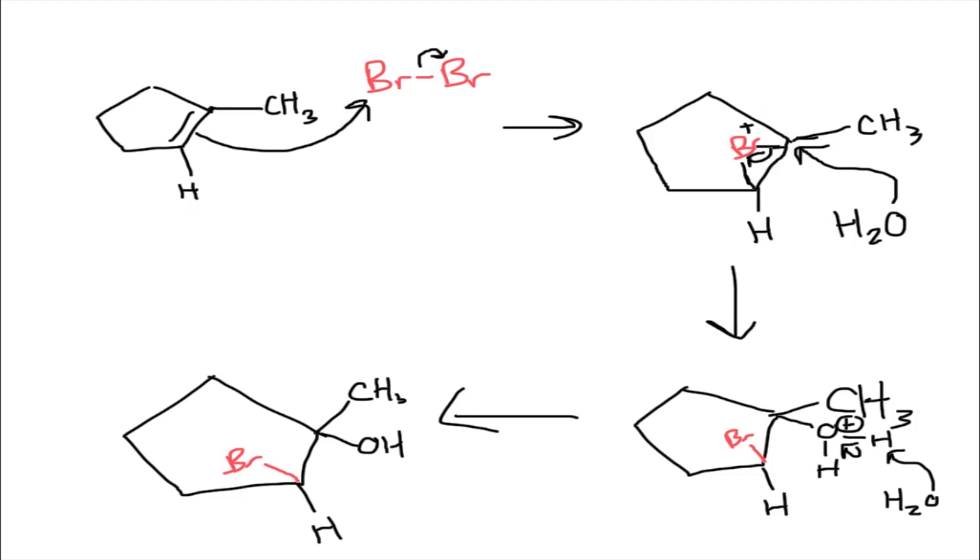And so what's going to happen next is this water molecule is going to come in and take that hydrogen and it's going to form a neutral OH. And so as a result your final product is this right here where the bromine and the OH are trans.